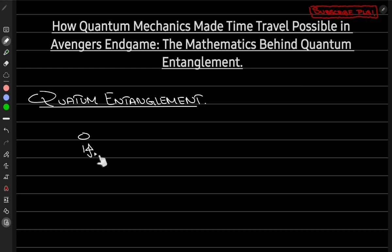I'm going to write this as the state phi 1. So for this particle, it has a state phi 1. And then you have another particle, phi 2, which denotes the state of a completely separate particle that is separate from the phi 1 particle. Now, in quantum entanglement, two or more particles can become linked in such a way that the state of one particle depends on the state of the other particle. If these particles become linked, then this state depends on that state — their states become entangled. That's why we call it entanglement.